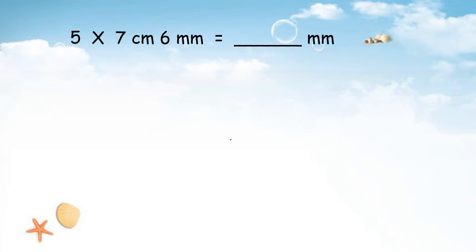Example 1: 5 times 7 cm 6 mm, and the answer is in mm. For this question, the units are cm and mm. For cm and mm, we will choose 1-1 box.